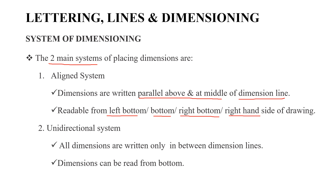The next system is the unidirectional system. In this system, all dimensions are written horizontally and read from the right side.